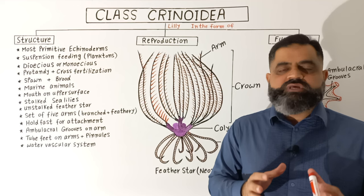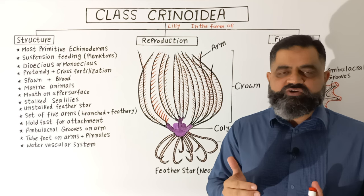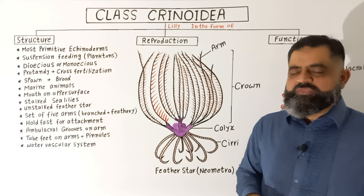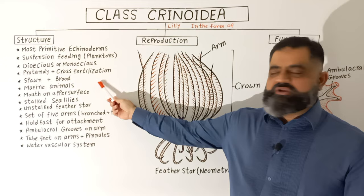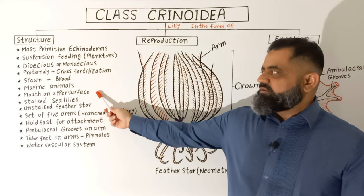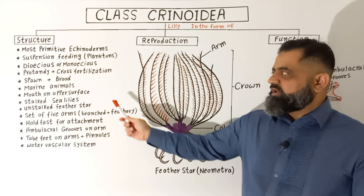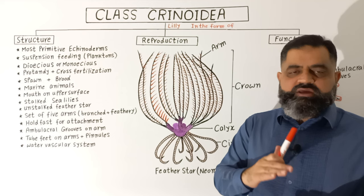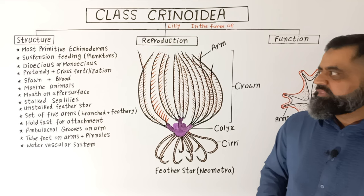After fertilization, these animals usually spawn — releasing eggs and sperm into the water for development. Some animals, after fertilization, brood their embryos on their arms. They are found specifically in marine environments. The mouth is present on the upper oral side, and the anus is present near the mouth on the aboral surface, located within the theca section of the body.